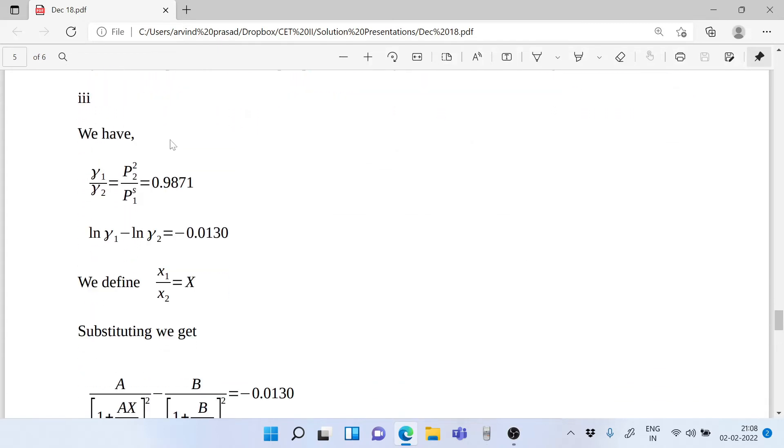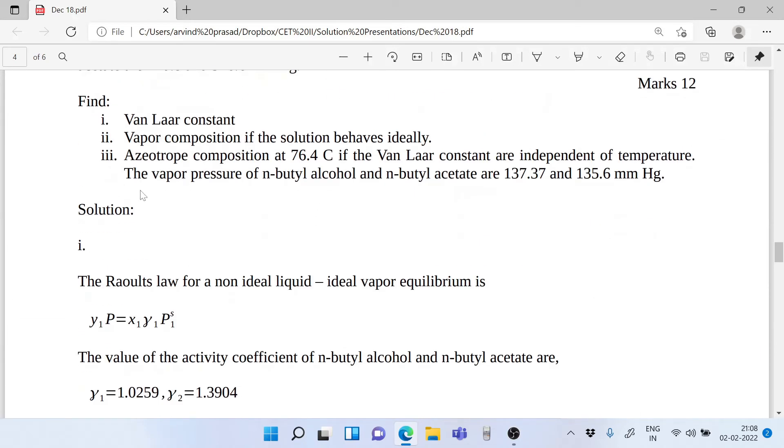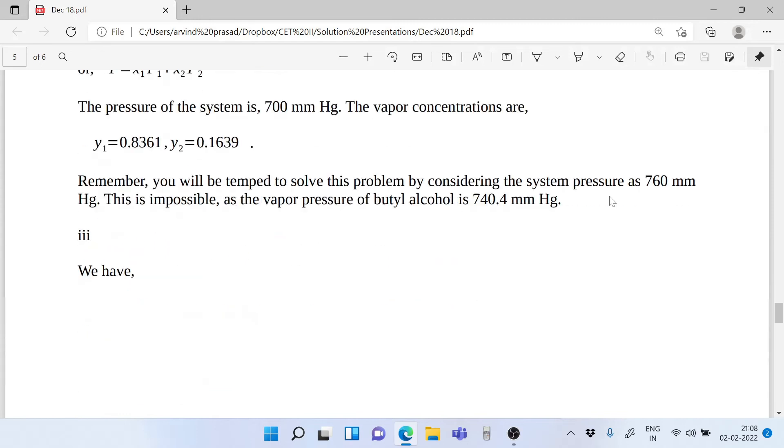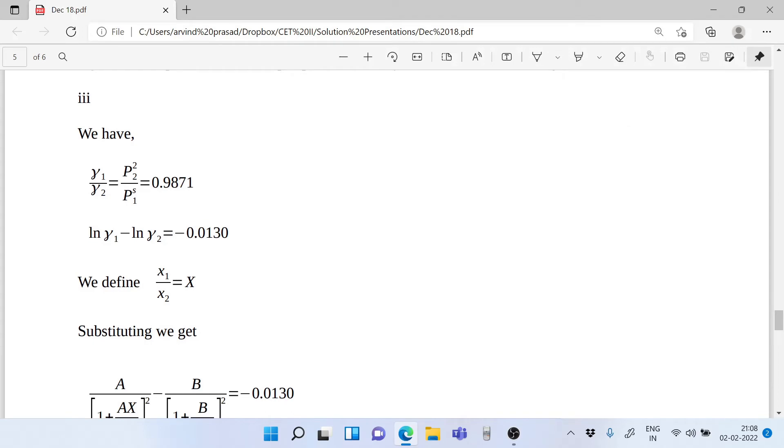The third part, now yes this is a bit tricky. In part number three it's given to find the azeotropic composition at 76.4 Celsius if the Van Laar constants are independent of temperature. The vapor pressure of n-butyl alcohol and n-butyl acetate are 137.37 and 135.66 mmHg. Now how do we solve this? The first thing that we do is we have ln γ₁ over ln γ₂ = P₂ˢ/P₁ˢ. Well that's a slight correction here, it's s, okay, so this is s, P₂ˢ by P₁ˢ.